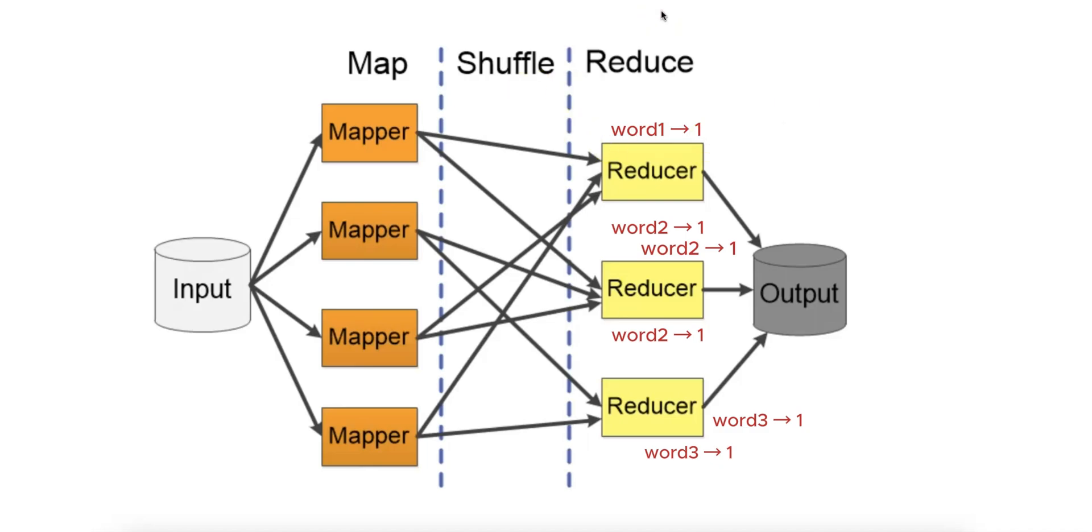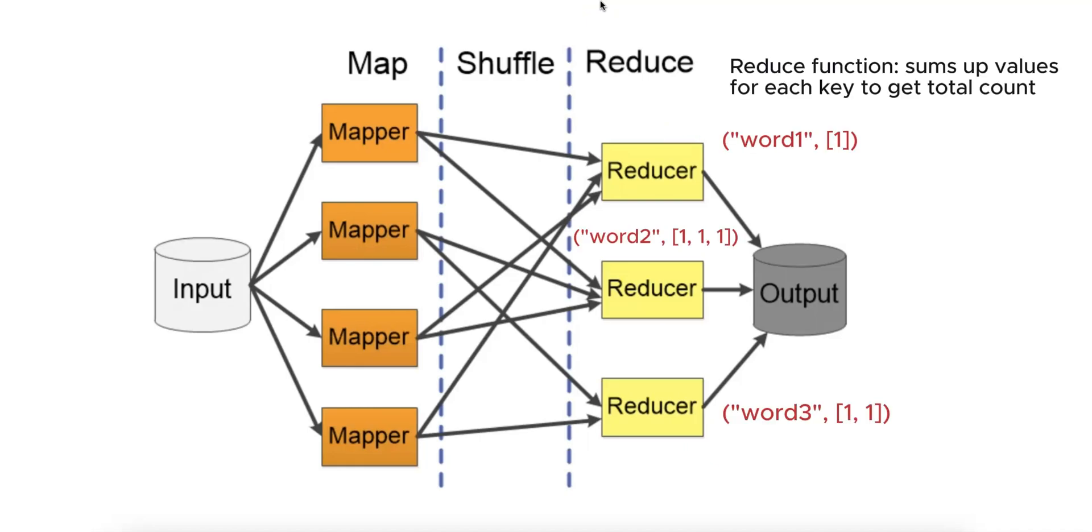Phase 3 is the reduce phase. Each reducer node is responsible for processing all values associated with a particular key. The programmer provides the reduce function, which receives the key and an iterator over all values associated with that key. The reducer processes these values, often aggregating them in some way, for example, summing values, finding averages, etc. The result is a reduced set of data for that key.